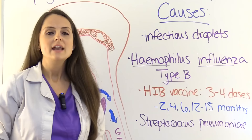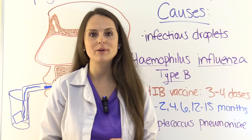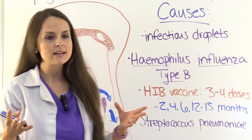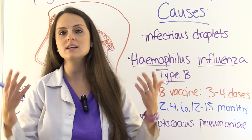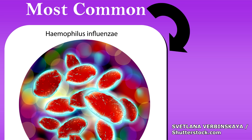Now let's look at the causes of epiglottitis — remember this for testing purposes. Remember the most common bacteria and how it is prevented, because as a nurse you want to educate parents on how to prevent this condition. Epiglottitis is spread by infectious droplets containing bacteria. The child breathes it in, it travels to the epiglottis, inflames it, and causes major problems. The most common bacteria to cause epiglottitis is called Haemophilus influenzae type B.